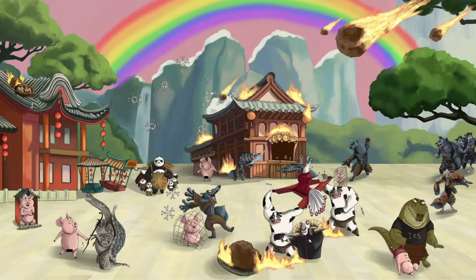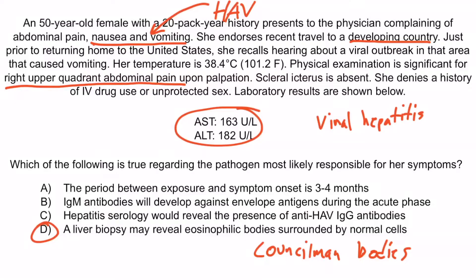And to help you remember councilman bodies, we have this city council member smacking the liver of this carrying cow. Now, choice A describes the incubation period, and three to four months is considered long. We know the incubation period for hepatitis A is short — remember those incubating eggs sitting there, not hanging from a long tree branch? Short incubation periods are generally considered to be less than a month in duration, so answer choice A is wrong.